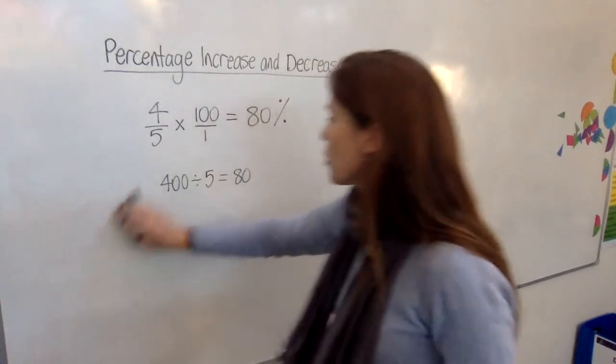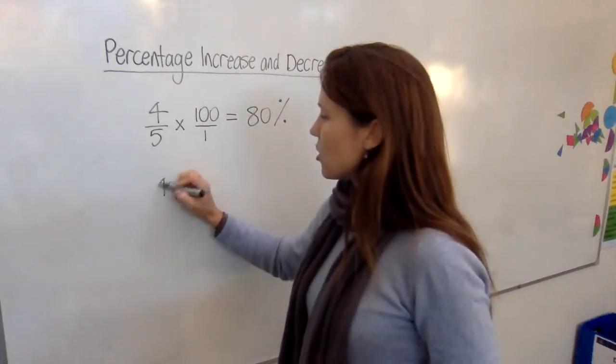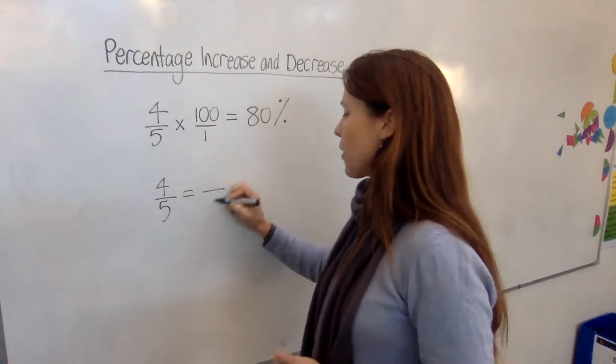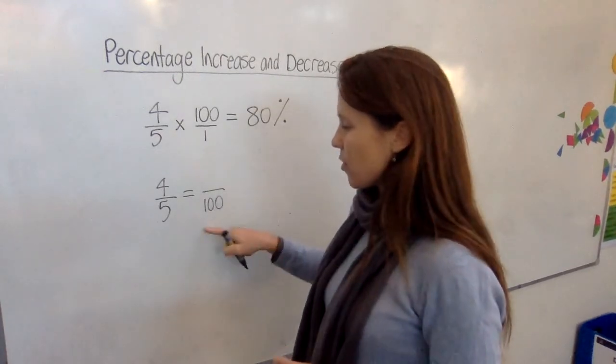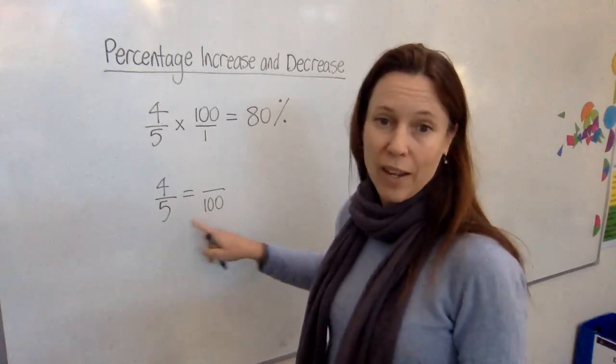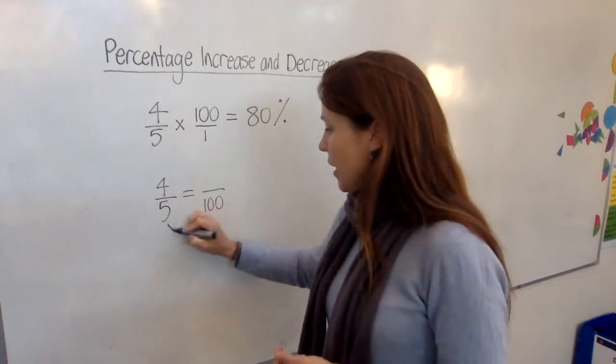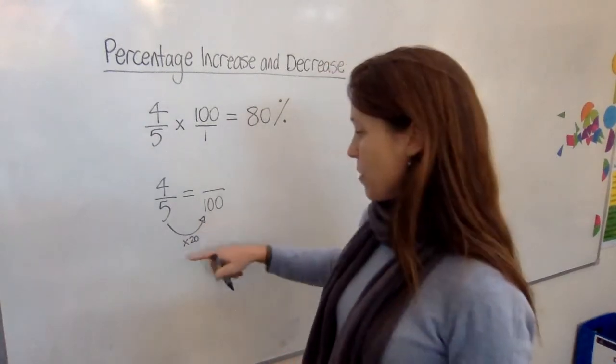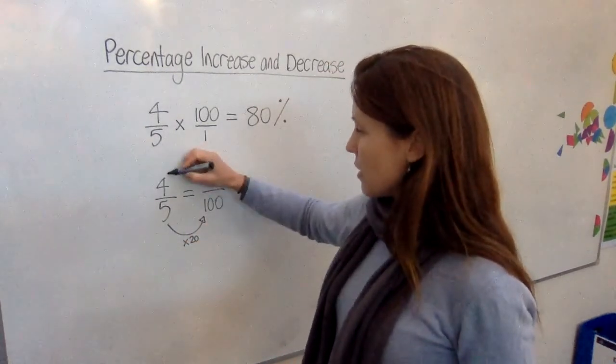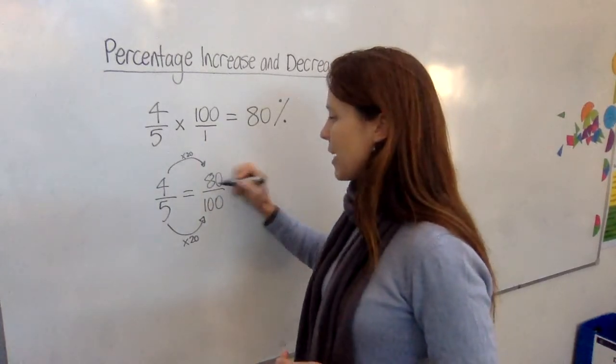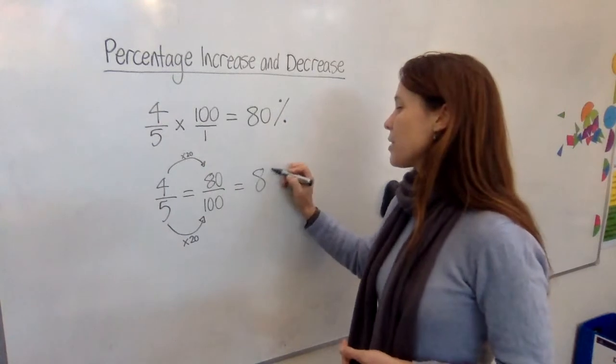Another method that you could use would be to say let's change four-fifths into a fraction out of 100. And this is a good method if you've got a nice round number on the bottom here that you know is a factor of 100. You can say, how did I make this one bigger? Only by multiplying and dividing, remember? Well, I multiplied by 20, so I have to multiply the top by 20. And that gives me 80 out of 100, which I know is 80%.